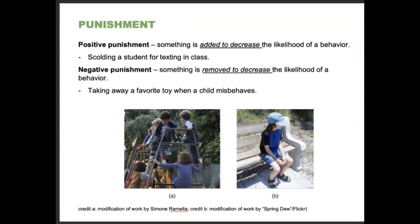Punishment is totally different. Positive punishment — something added to decrease the likelihood of behavior — includes scolding a student for texting in class: you're adding the scolding in order to decrease the behavior. Negative punishment is something removed to decrease the likelihood of behavior — taking away a favorite toy when a child misbehaves, or not giving them their allowance for that week if they do something bad.